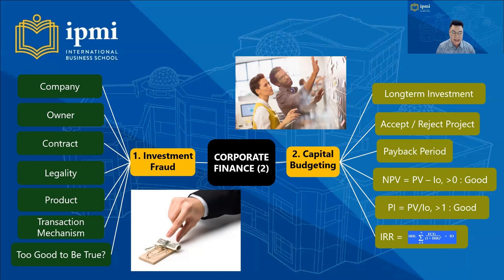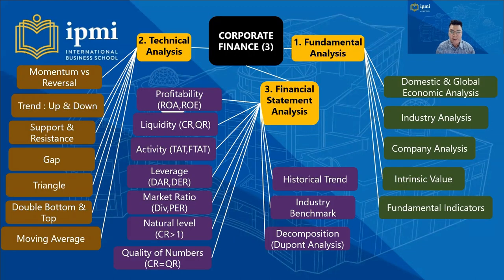We should also check the transaction mechanism and the logic — is it too good to be true or not? Number two is capital budgeting, which covers long-term investment and accept-or-reject project decisions based on four measurements: payback period, net present value (NPV), profitability index (PI), and IRR.